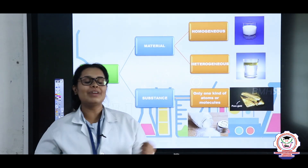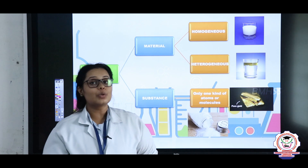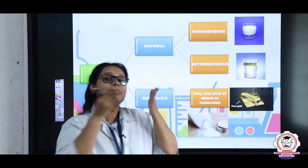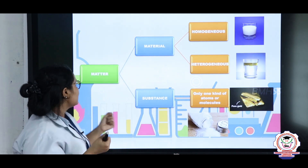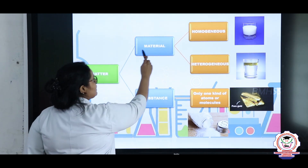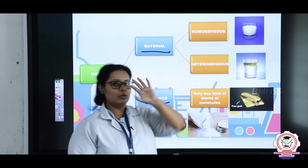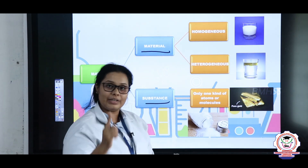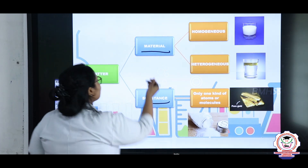Now we have learnt about matter — what it is. Now we should know how matter is distributed into different types. Matter is of two types: one is a material and the second is a substance. First we will talk about material. A material is one kind of matter or one kind of molecules present in a particular thing.